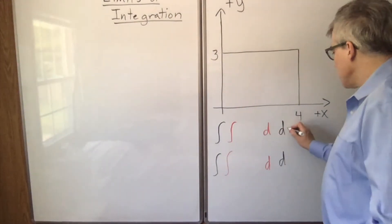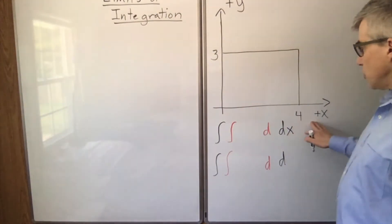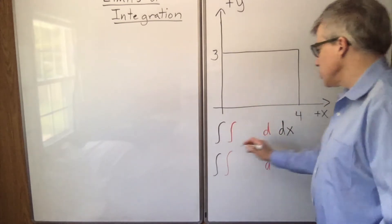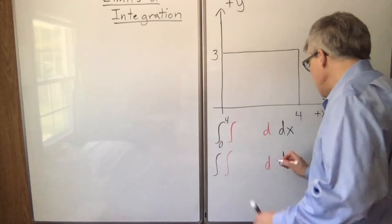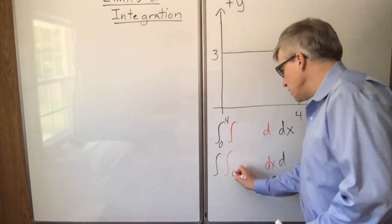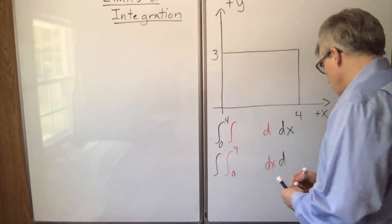So if we have x as the outer integral, then x is just ranging from 0 to 4. Whereas if x is the inner integral, it's still integrating 0 to 4.